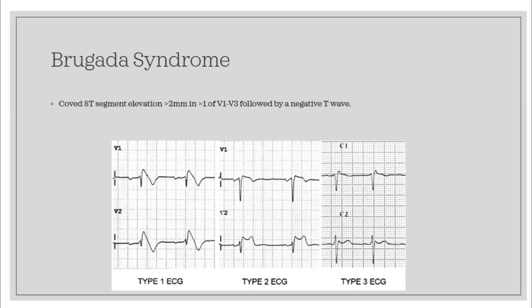Next we're going to be talking about Brugada syndrome. If you ever want to get an electrophysiologist to go from a bland, boring person to like a four-year-old tweaking out on some sugar, just talk about Brugada syndrome with them. Brugada syndrome occurs because of a mutation in the cardiac sodium channel gene. This is often called a sodium channelopathy, which basically means it's a poisoned sodium channel. Looking at the picture, there are three different types. The one that is more sensitive for Brugada is the type 1 morphology — forget about type 2 and type 3, as they are not as concerning.